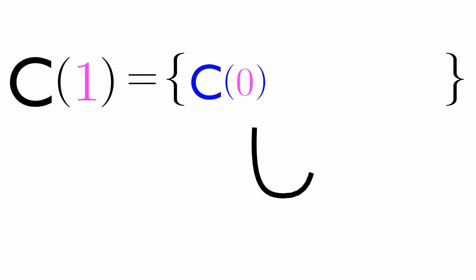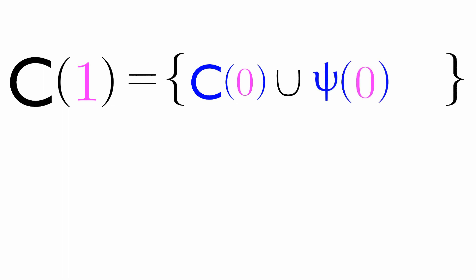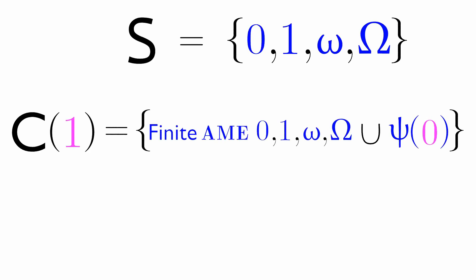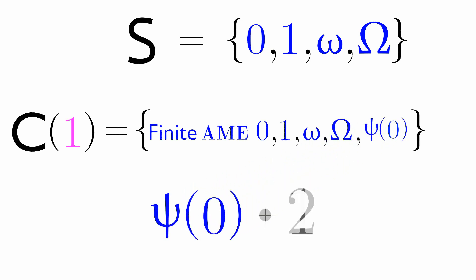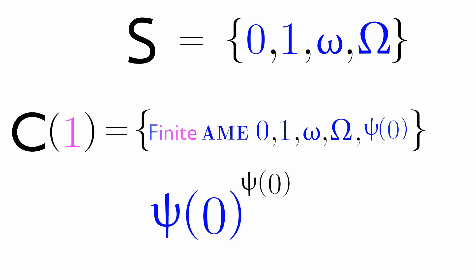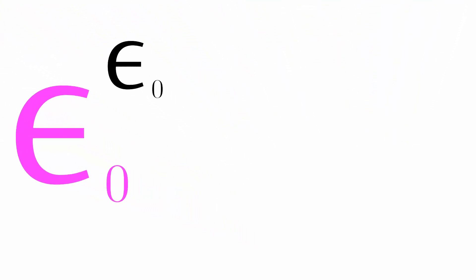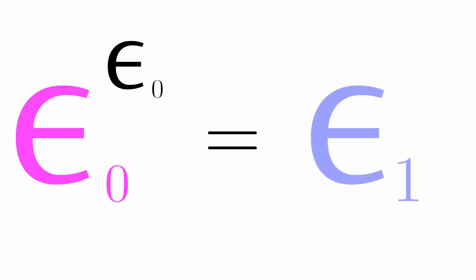If we have C1, this will contain C0 in union with Psi0. What this means is that we have AME for all the elements of C0, including Psi0. We can add, multiply, and even exponentiate Psi0, but only a finite number of times. And as we've known, Psi0 is the same as epsilon naught. If we exponentiate epsilon naught an infinite number of times, this creates epsilon 1. So this is our Psi1.